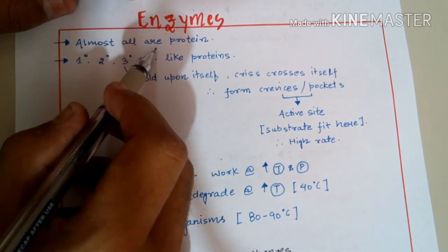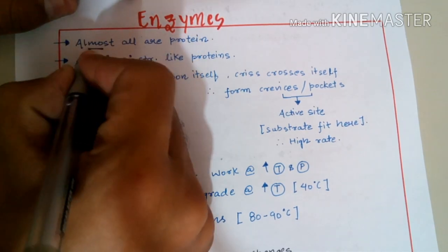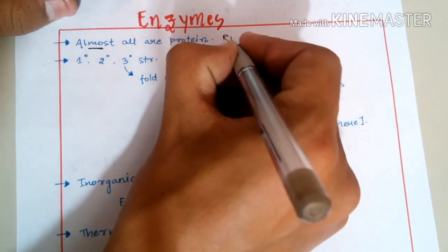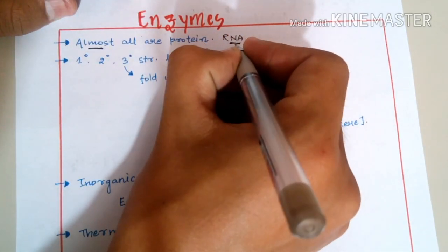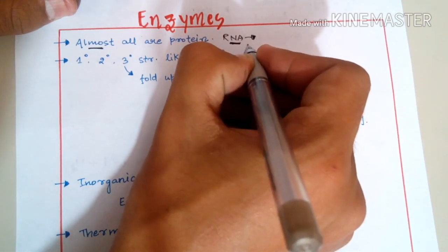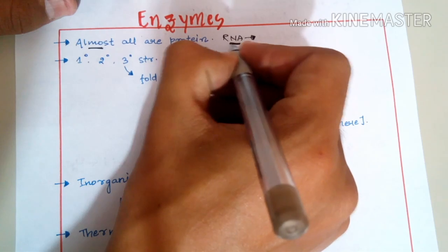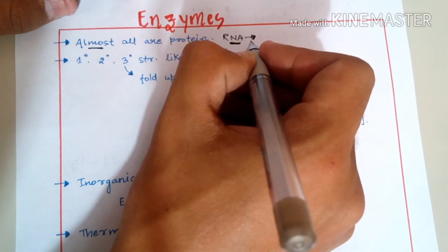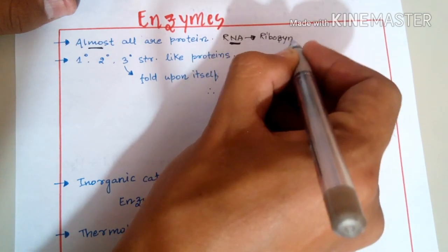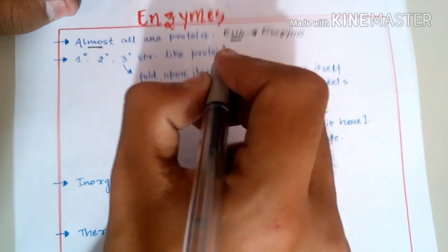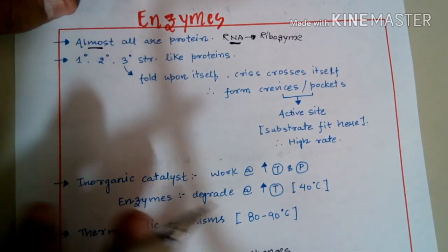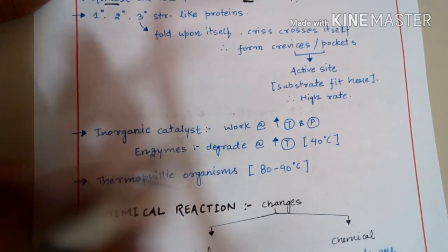Almost all enzymes are proteins. 'Almost all' means there are some exceptions. For example, some nucleic acids such as RNA have catalytic properties. When RNA works as a catalyst, it is known as a ribozyme, and ribozyme is not a protein. So almost all — not all — enzymes are proteins.